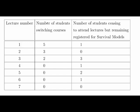So here we are. We've got 7 lectures and we have the number of students switching courses and then the number of students ceasing to attend the lectures but remain registered for the module. So because it's boring. So we have one drop out in the first lecture, 3 after the third lecture and so on.